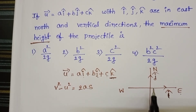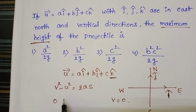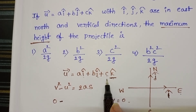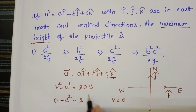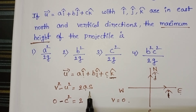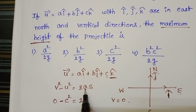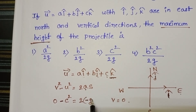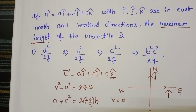At maximum height, final velocity is equal to 0. So in place of v, velocity is 0, and initial velocity along vertical direction is c. So minus c square equals 2 times acceleration times s. Acceleration due to gravity is always acting in downward direction, but the projectile moves upward, so in place of a we put minus g, and in place of s we put maximum height h. From this, the minus signs on both sides get cancelled, giving h equals c square by 2g.